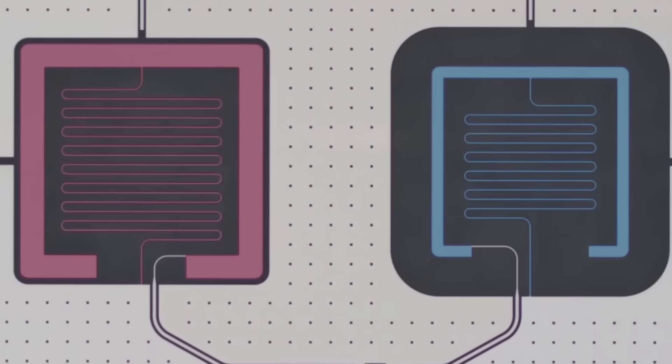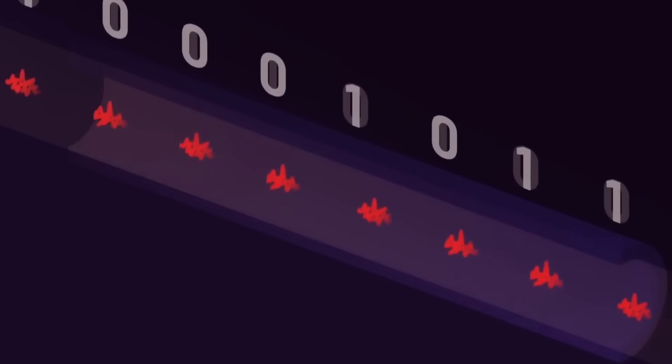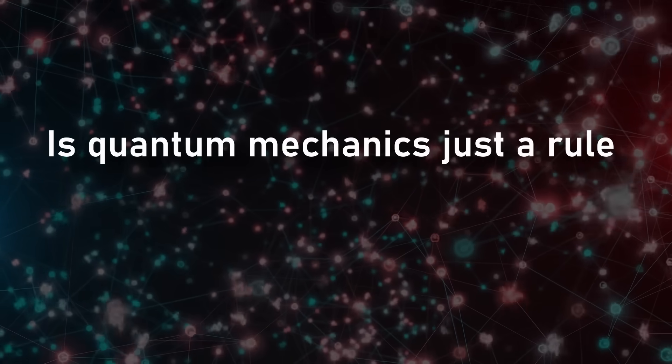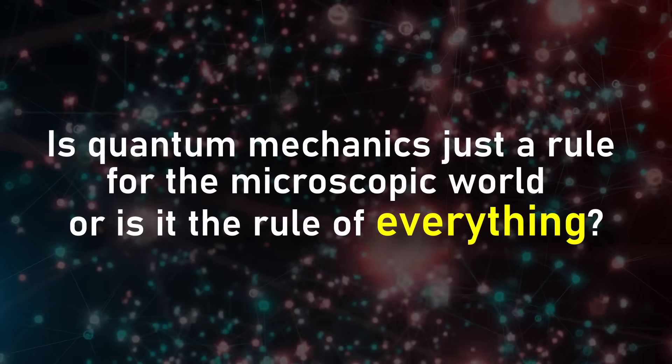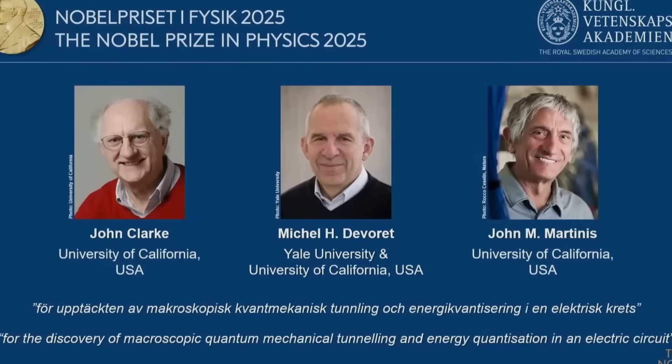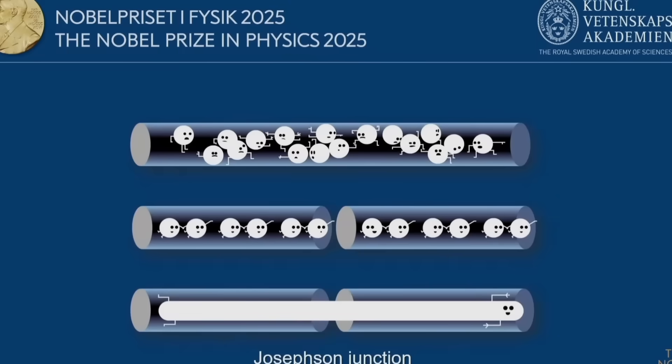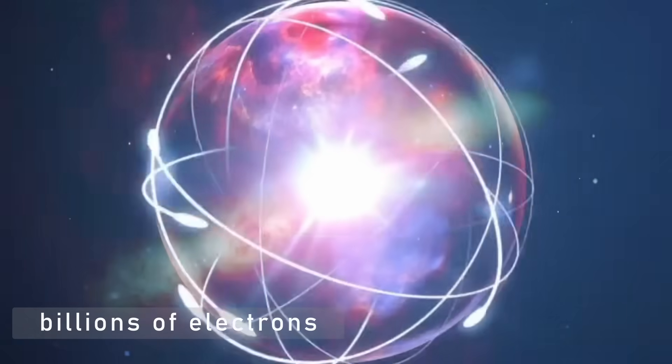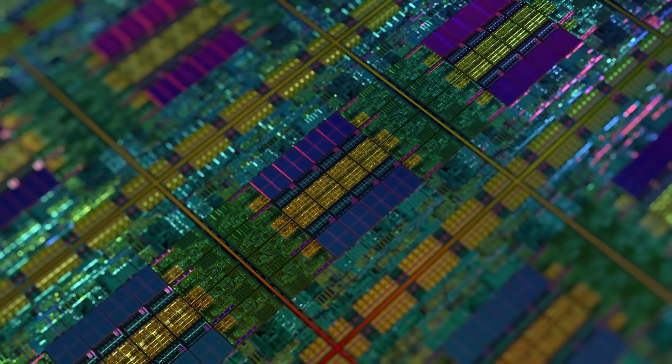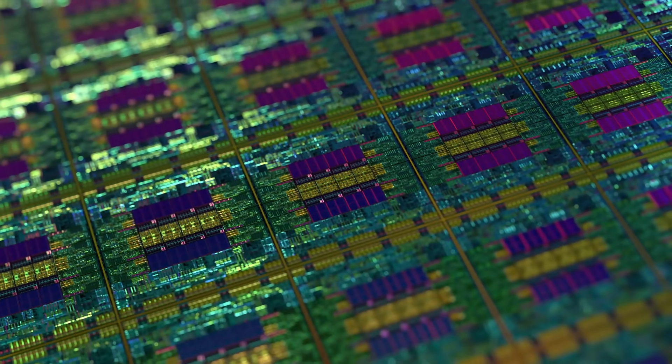For decades, physicists debated a profound question. Is quantum mechanics just a rule for the microscopic world, or is it the rule of everything? Clarke, Deverett, and Martinis answered that question through precision experiments. They showed that even a circuit containing billions of electrons, visible under a microscope, can behave according to quantum laws.